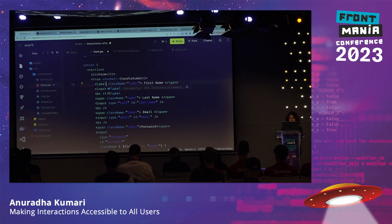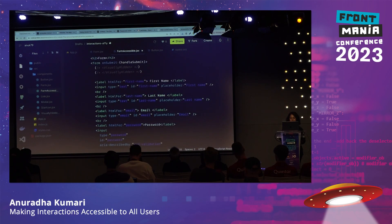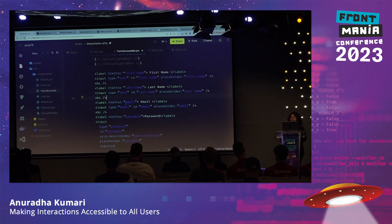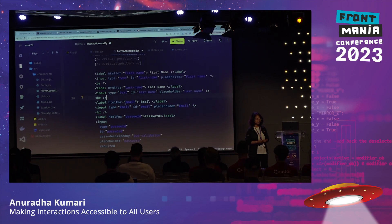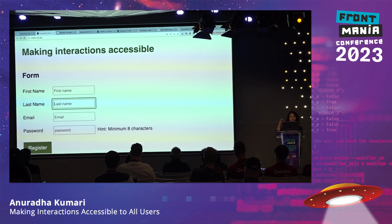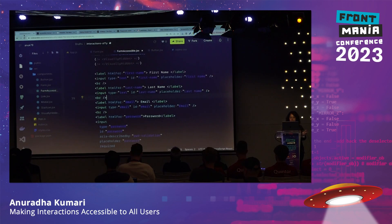The way to do it: if label and input are separate, provide a 'for' attribute (htmlFor in React) matching the input's ID — 'this label is for this input.' If the input is surrounded inside the label element, you don't need it. This is good not only for screen readers but also for keyboard and mouse users — if I click on the label, the input gets focused. Even for radio or checkbox with small controls, clicking the label checks the item.